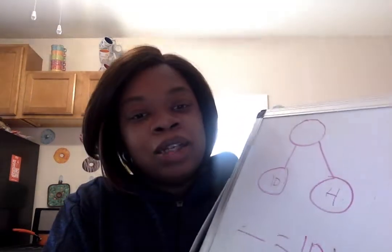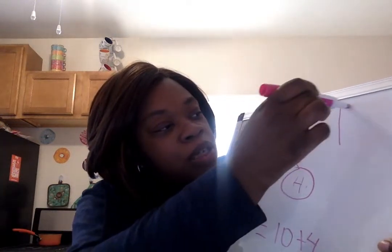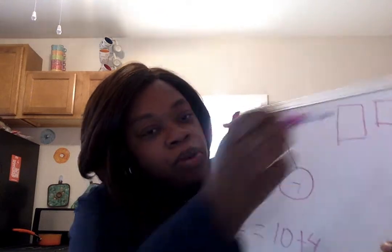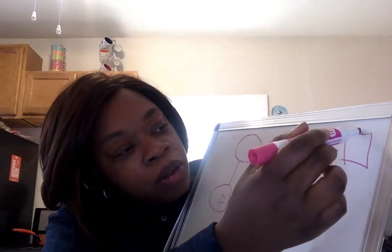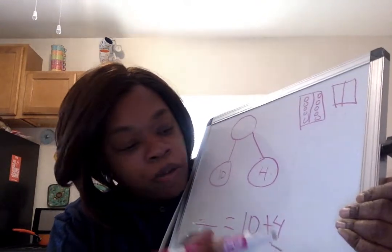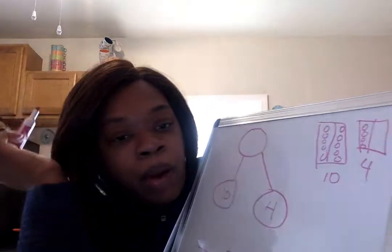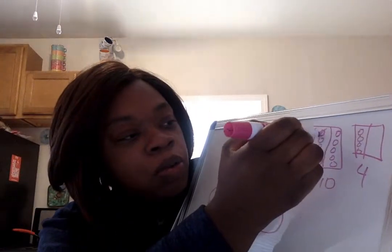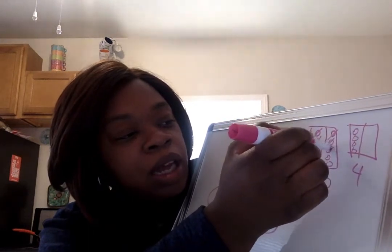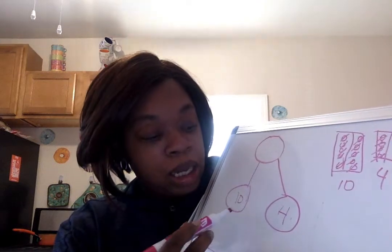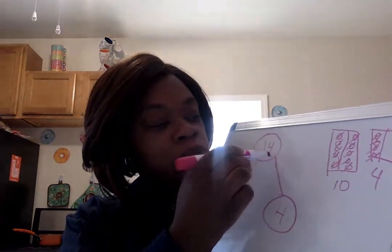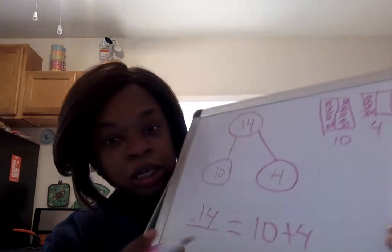So let's go ahead and draw some pictures to help us figure this out. I'm going to draw my 10 frame and then another 10 frame. 1, 2, 3, 4, 5, 6, 7, 8, 9, 10. And then this one we need 4, so I'm going to draw 4 circles: 1, 2, 3, 4. Now we can count to see how many there are all together: 1, 2, 3, 4, 5, 6, 7, 8, 9, 10, 11, 12, 13, 14. So 10 and 4 is 14 — 10 ones and 4 ones. So 14 equals 10 plus 4.